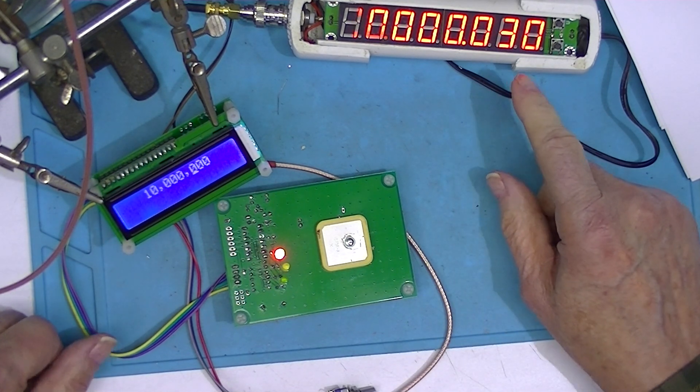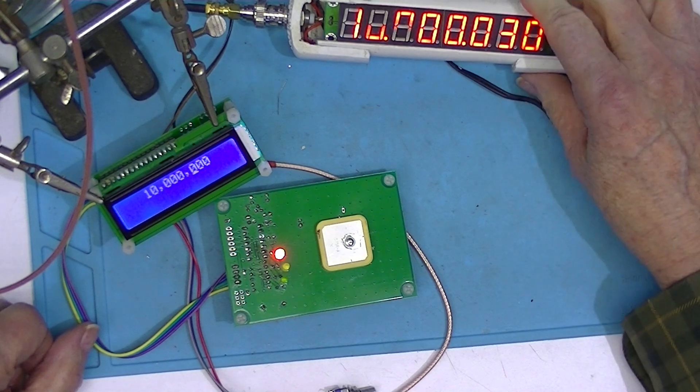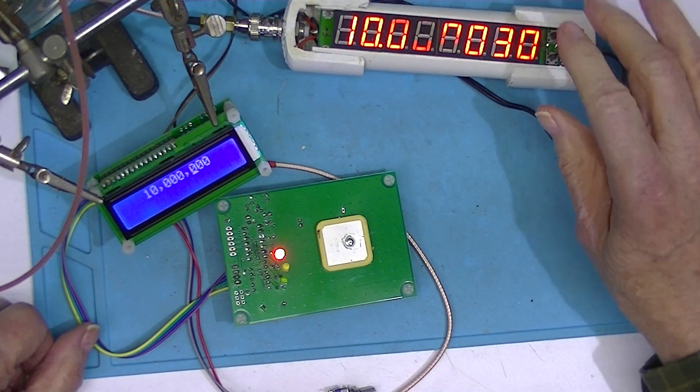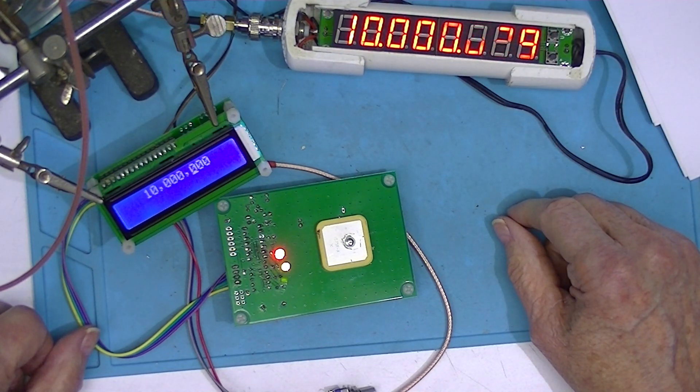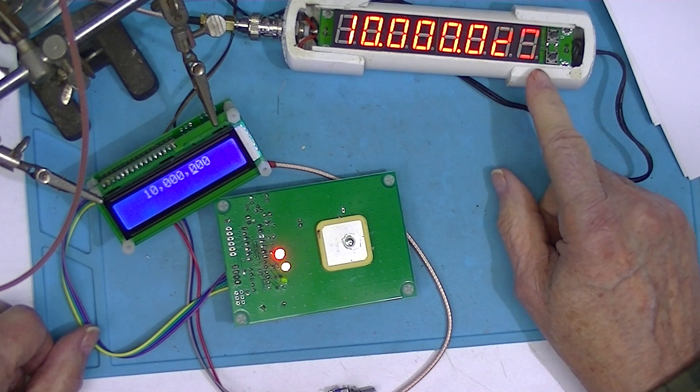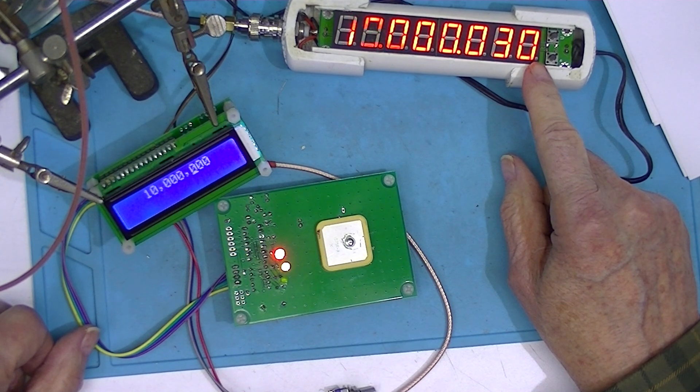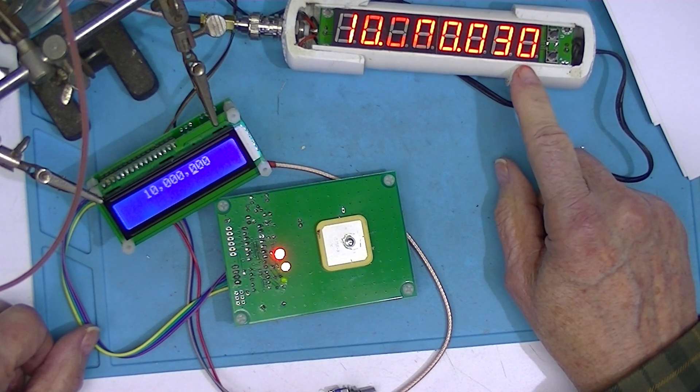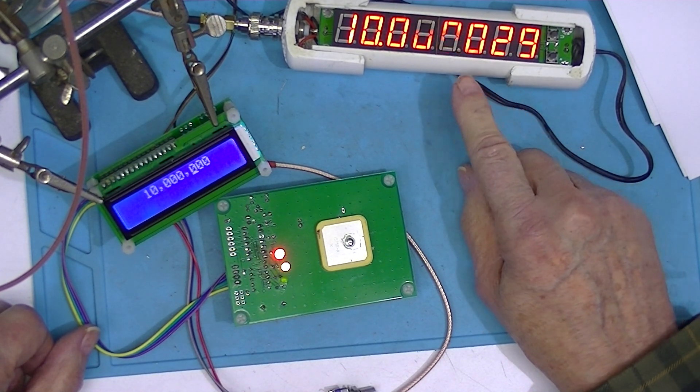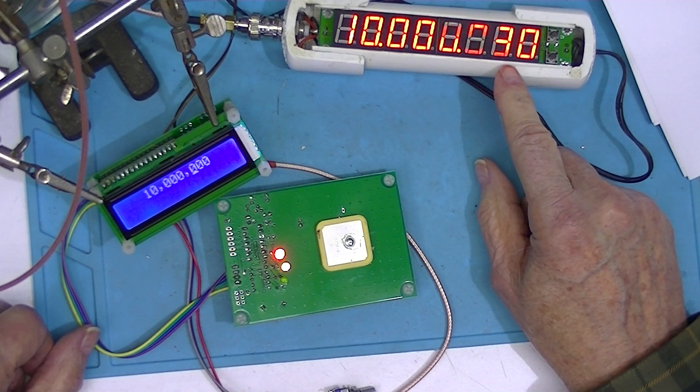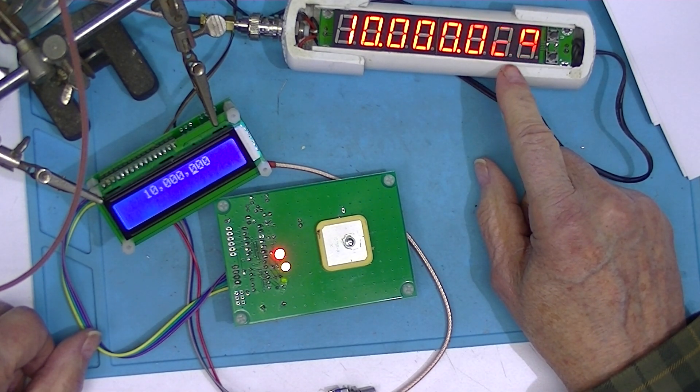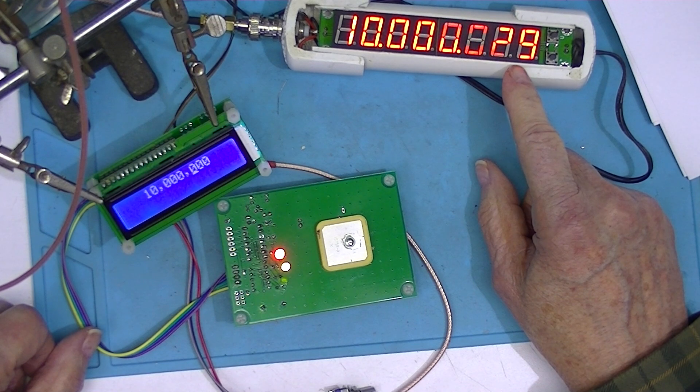Now here is the frequency meter hooked up to my TCXO standard. This should be reading 10MHz. As it is, it's reading about 29.5Hz high.